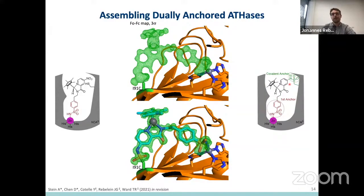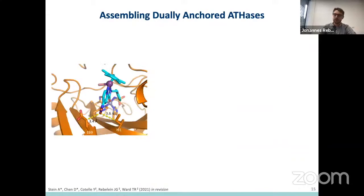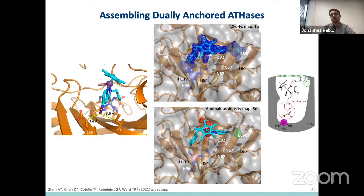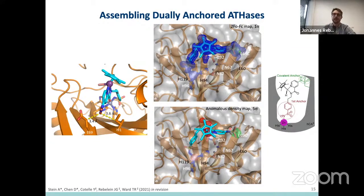We also investigated the second mutant, where we mutated glutamate 69 into a cysteine. As shown here, I also observed the formation of a sulfonamide bond, so this cofactor is also covalently anchored. But overall the density is not quite as good, and I see several spots of anomalous density, which tells you that not all of the cofactor is covalently bound — only around 70%, with the rest still flexible. If you look at the cofactor, you see it is actually quite strained, visible from its C-shape, which is probably the reason we do not see complete formation of the covalent anchor.